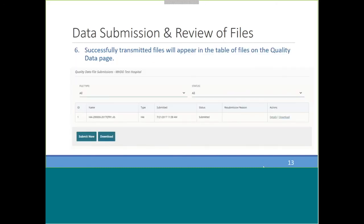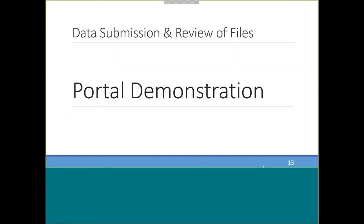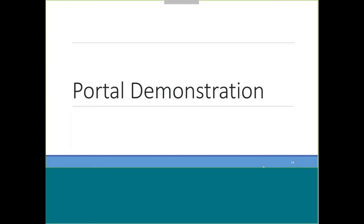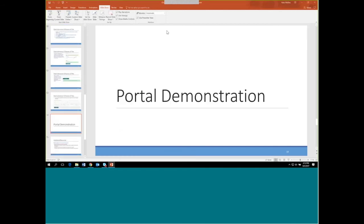This is an example of what that quality data screen will look like. There will be a table with a listing of all the files that have been transmitted, which you can filter by file type or status. You can also download an Excel version of this table. Now I'm going to switch over to a live portal demo where I can show you a few examples and scenarios of data submission.